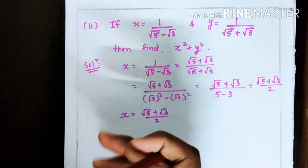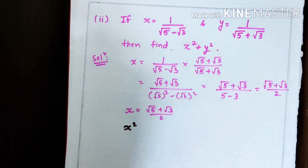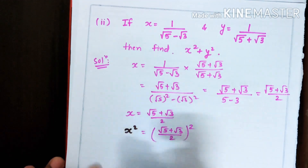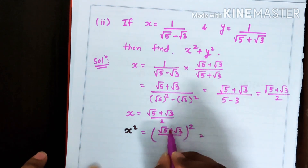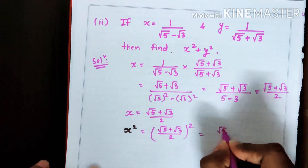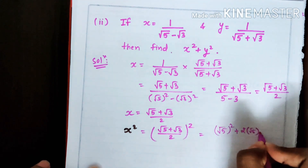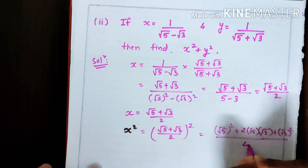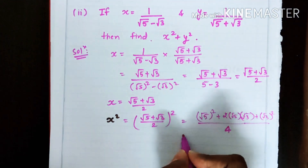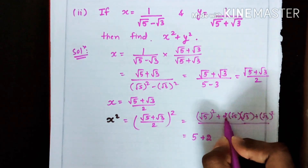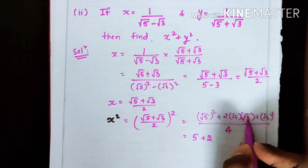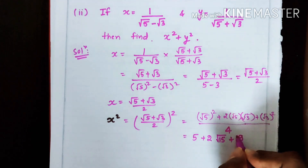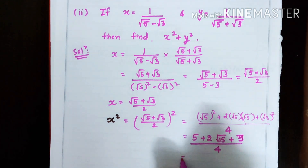We need to find x², so we square both sides. x² = [(√5 + √3) / 2]². We apply the identity (a + b)² = a² + 2ab + b², giving [√5² + 2·√5·√3 + √3²] upon 2², which is [5 + 2√15 + 3] upon 4.